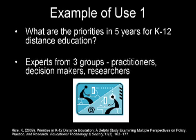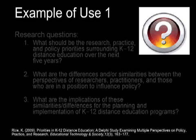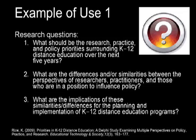The first example is a paper entitled 'Priorities in K-12 Distance Education: A Delphi Study Examining Multiple Perspectives on Policy, Practice, and Research.' The research question was: what are the priorities in five years for K-12 distance education? They pulled experts from three groups: practitioners in the field, decision makers on distance education, and researchers who have been studying distance education. The three research questions asked what should be the research, practice, and policy priorities; what are the differences and similarities between the perspectives of researchers, practitioners, and policy influencers; and what are the implications for the planning and implementation of K-12 distance education programs.